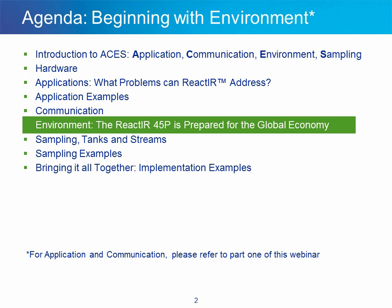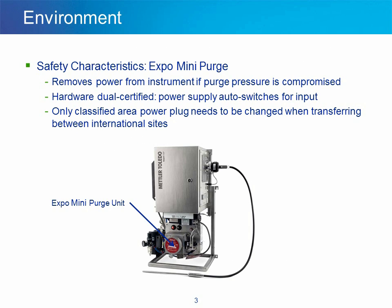The Reactor Air 45P is prepared for the global economy. The Expo Mini Purge automatically removes power from the instrument if purge pressure is compromised. There is no conversion between North American and European requirements. The hardware is dual certified. The power supply auto-switches for input — for example, U.S. 110 volts, Europe 240 volts — so that the Reactor Air 45P is global ready. Only the classified area power plug needs to be changed when transferring the system between international sites.